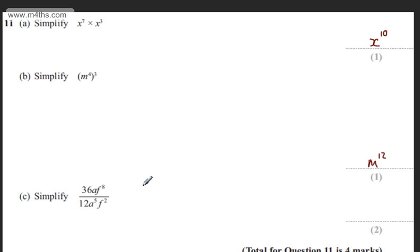In part C, for two marks, we need to simplify 36a f to the power of 8, over 12a to the power of 5, multiplied by f squared.